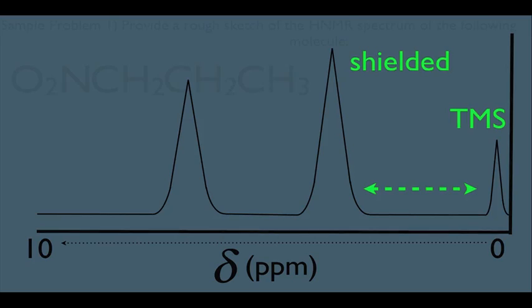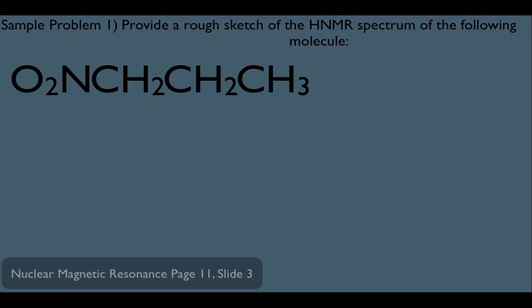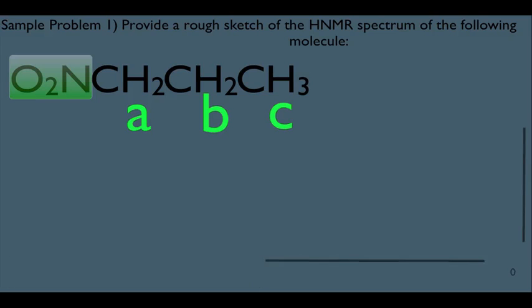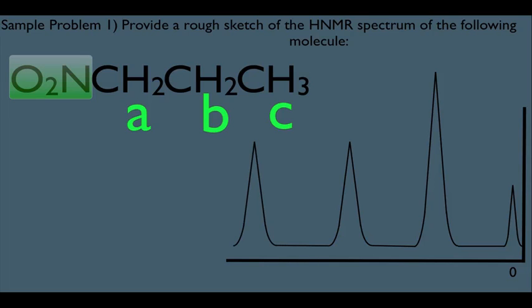So let's look at a sample problem and apply our knowledge here. Look at sample problem one. It's saying provide a rough sketch of the HNMR spectrum of the following molecule. So in order to do this, we're going to use the first two aspects of HNMR. The first thing we should notice is this very electronegative NO2 group here, which means this would be an A-type hydrogen. They're the closest to the NO2 group. These would be our B-type hydrogens, and right here would be the C-type hydrogens. So, so far in our sketch here, we would expect to see three peaks in the HNMR. And there it is, the first aspect of HNMR.